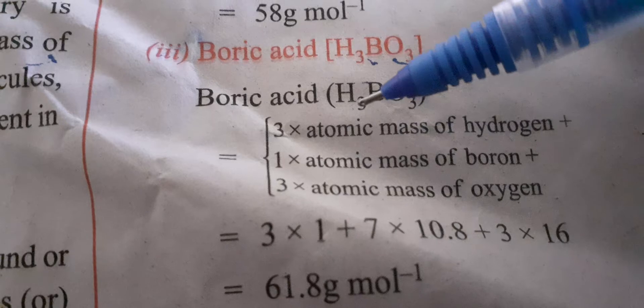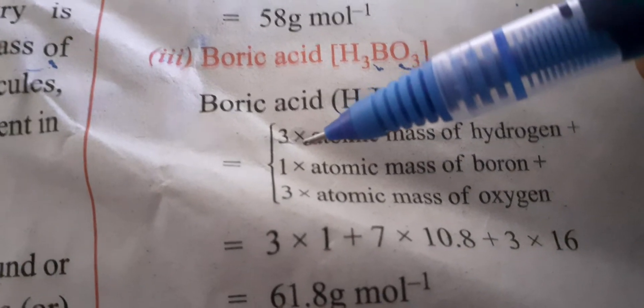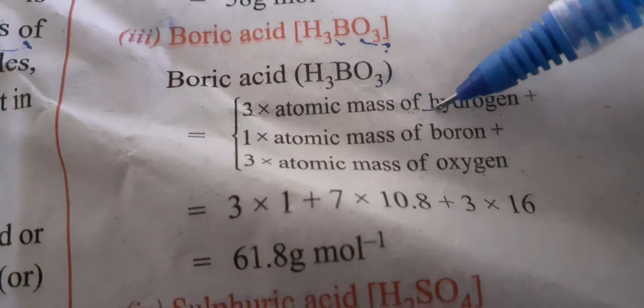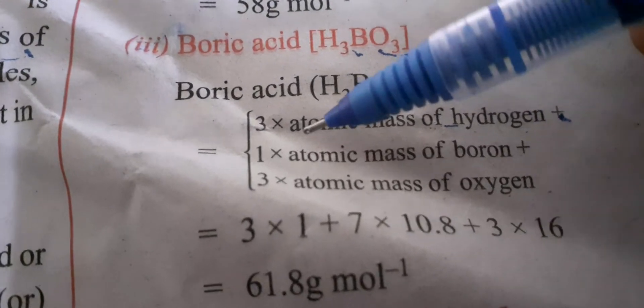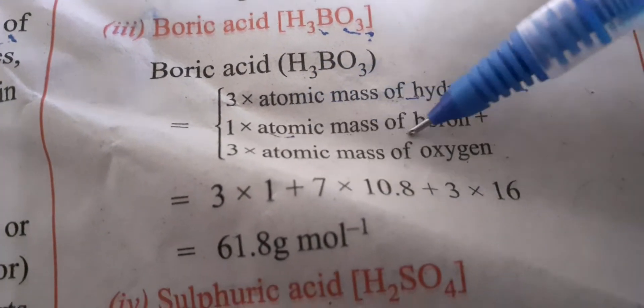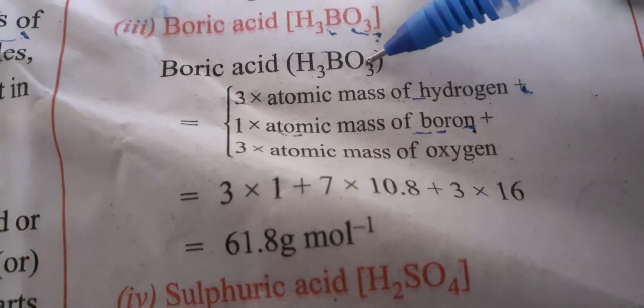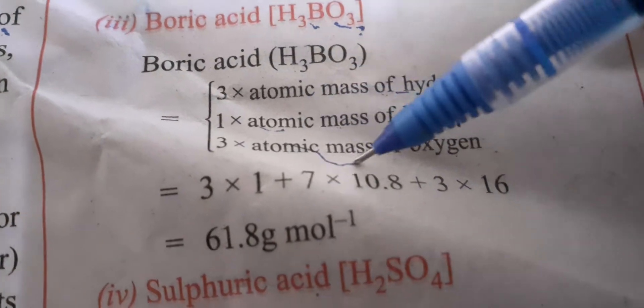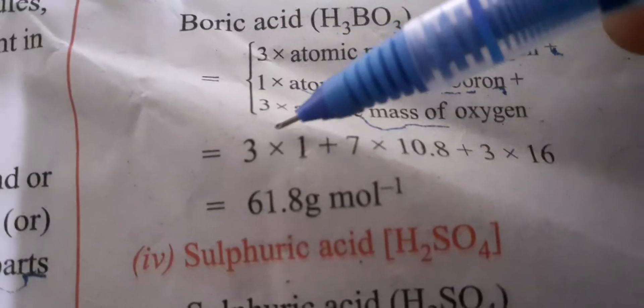Boric acid, H3BO3. It has 3 hydrogen atoms, so 3 times atomic mass of hydrogen, plus 1 boron, so 1 times atomic mass of boron, plus there are 3 oxygen, so 3 times atomic mass of oxygen.